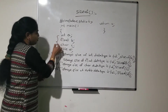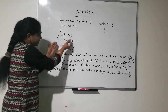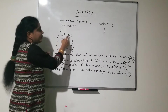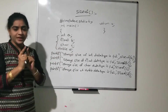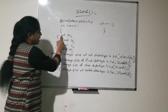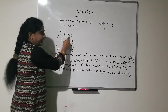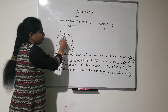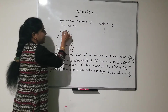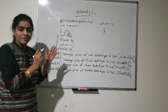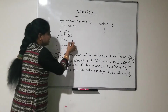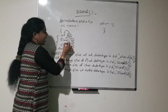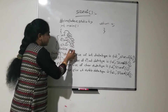Here I have taken 4 variables of different data types. The syntax for variable declaration is: data type followed by variable name. int a — int is the data type, a is the variable name, meaning a is a variable of type integer. Similarly, b is a variable of type float, c is a variable of type character, and d is a variable of type double.